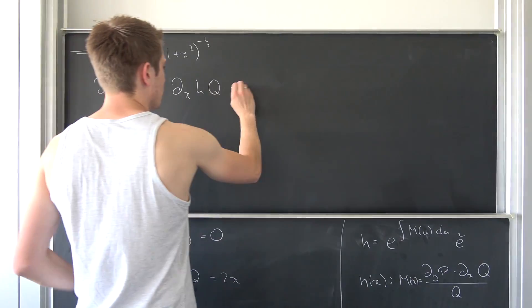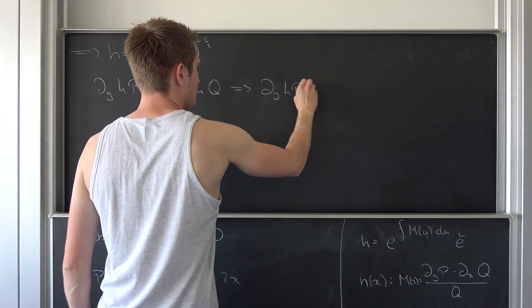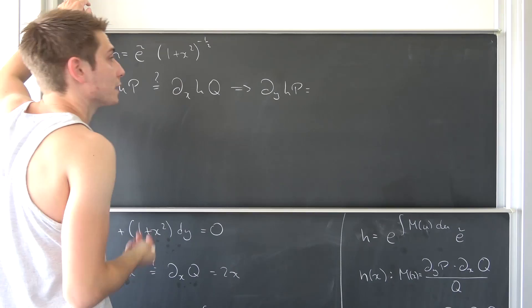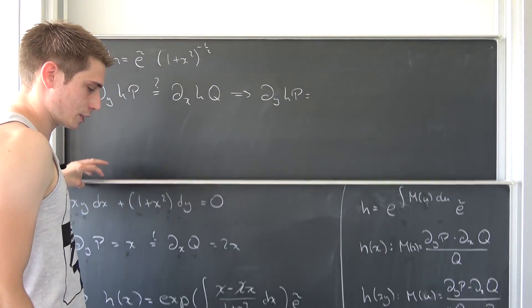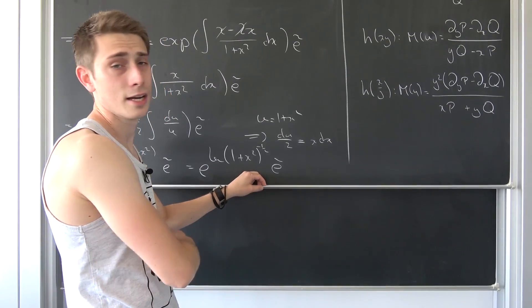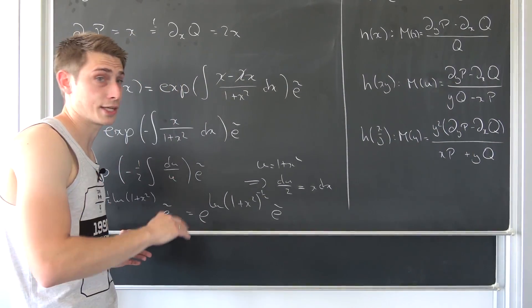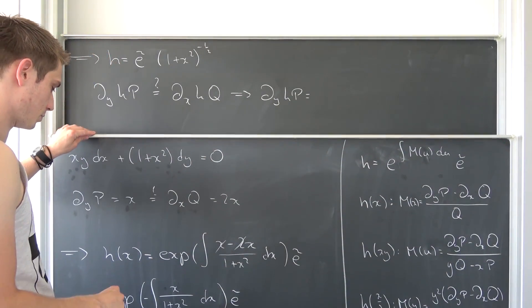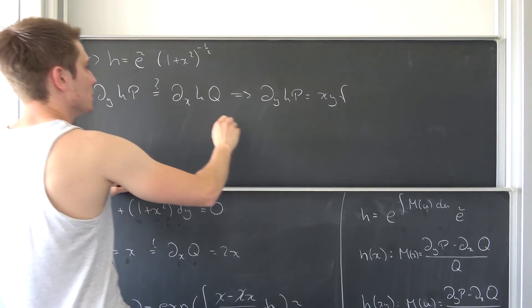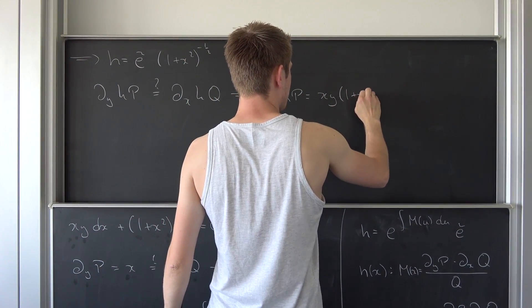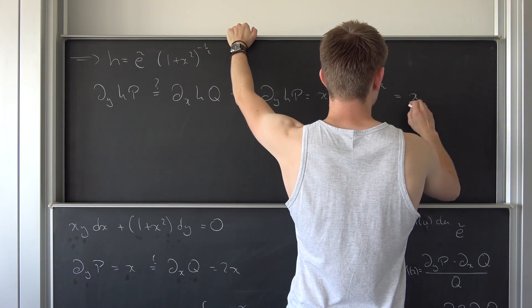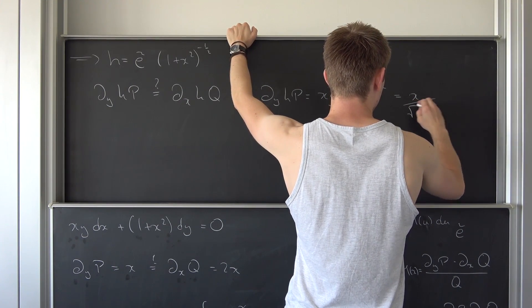What we have to check is if ∂/∂y of (h·P) equals ∂/∂x of (h·Q). We can just plug stuff in. ∂/∂y of (h·P) — notice we have the arbitrary constant factor on both sides, so we can cancel it out, since e to a constant is never equal to zero. Our P was nothing but x·y times our integrating factor (1 + x²)^(−1/2). If we differentiate this with respect to y, it's just going to result in x over the square root of (1 + x²).